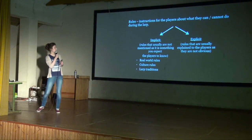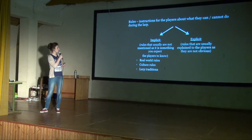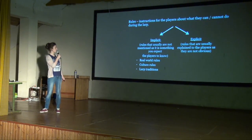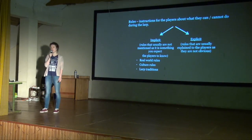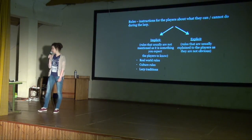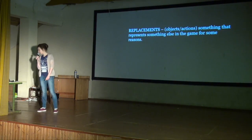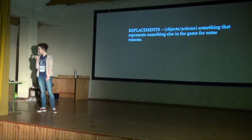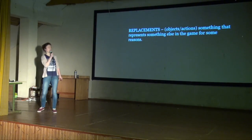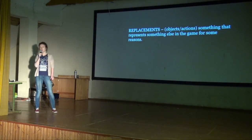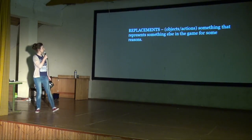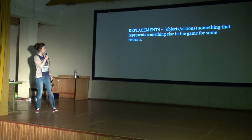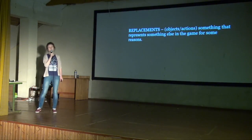We have explicit rules that are usually explained to the players as they are not very obvious. And we have replacements — these can be objects or actions, something that represents something else in the game for some reason.